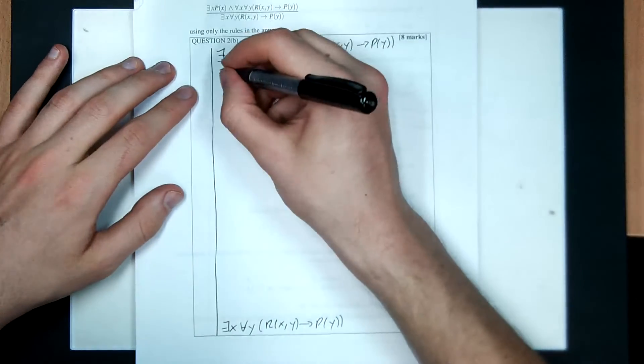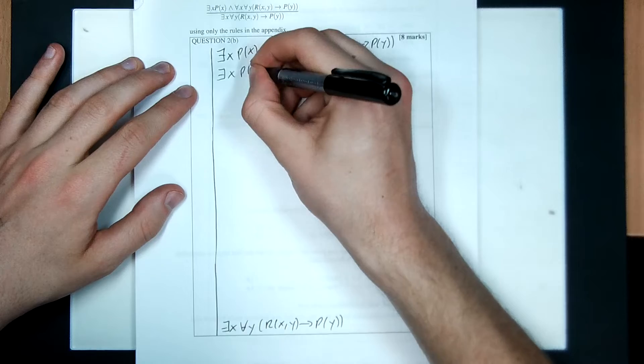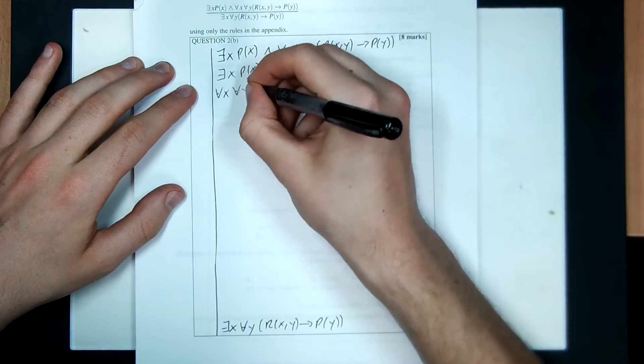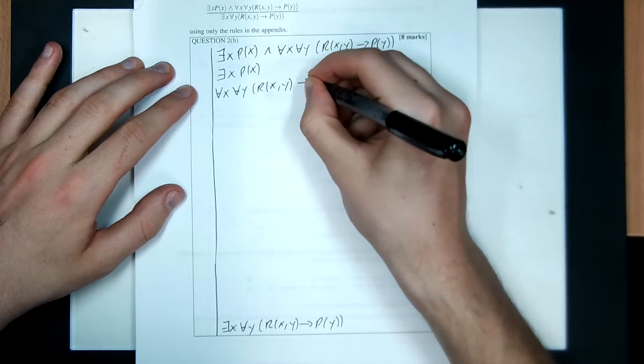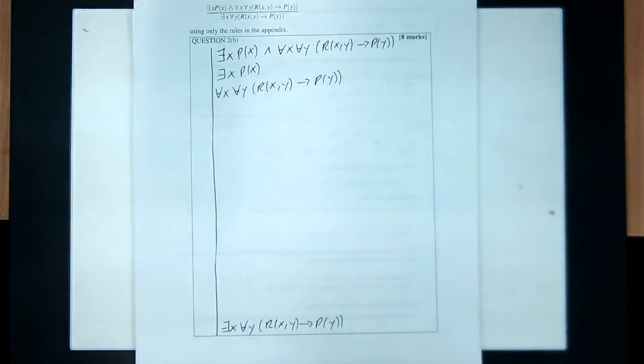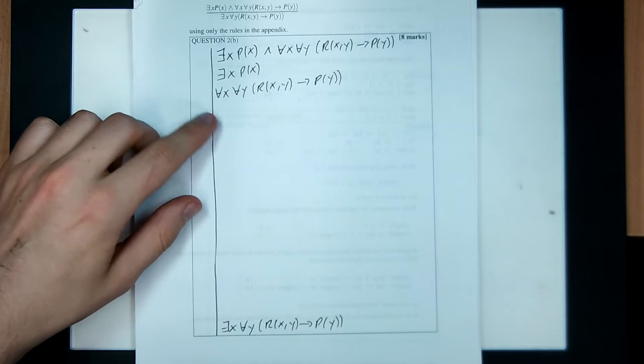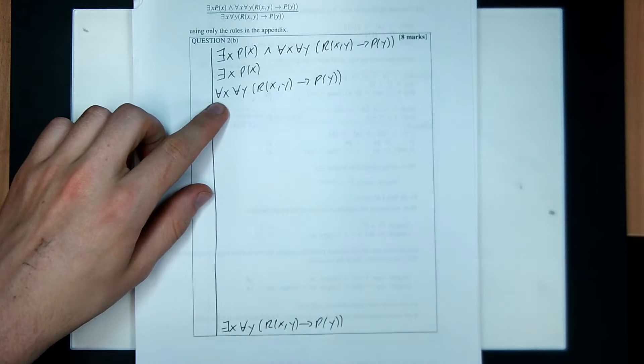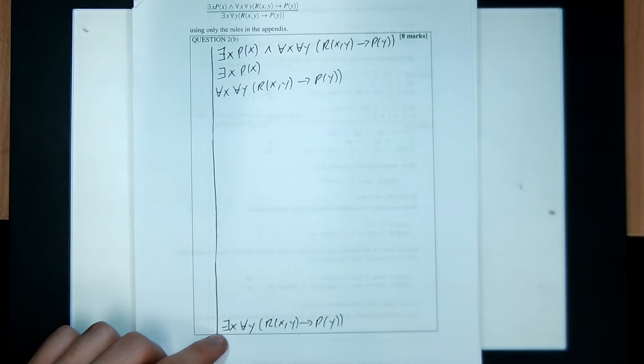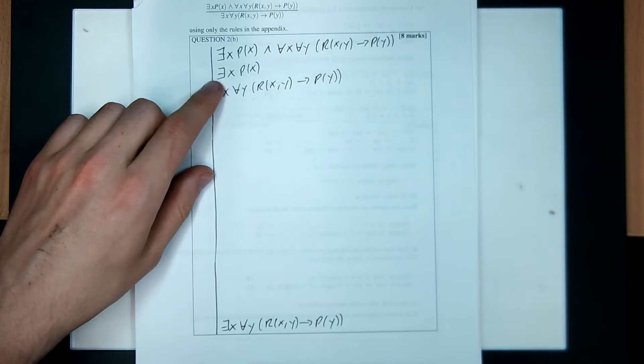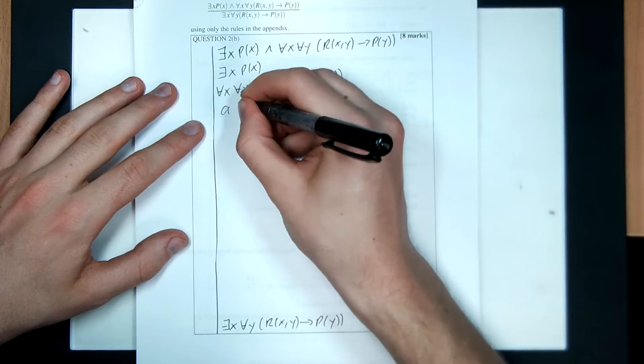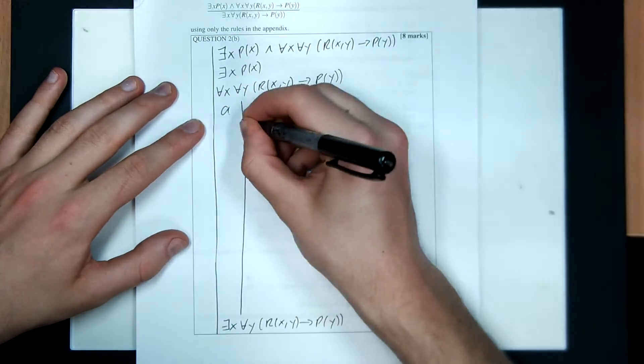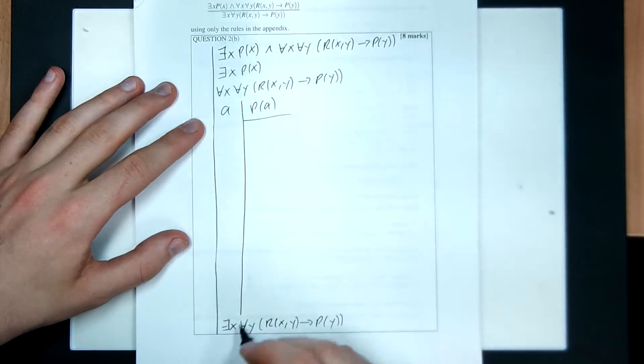Okay. Well, I can definitely AND eliminate for free. That can never hurt me, so I'm going to do that. For all X, for all Y, R(X,Y) implies P(Y). Okay. What can I do now? Well, I can't for all eliminate from the top because I've got no variable to for all eliminate with. And I can't existence eliminate backwards from the bottom. That's no good. I can existence eliminate from the top. So, to get from here to here, I assume for an arbitrary A, P of A. Okay. And then somehow get all this rubbish. Exists X, for all Y, R(X,Y) implies P(Y).